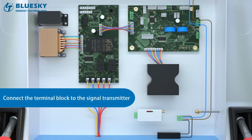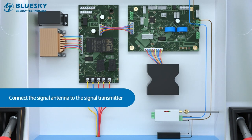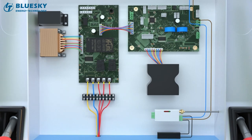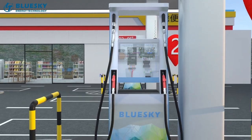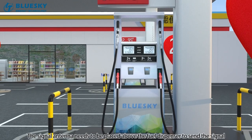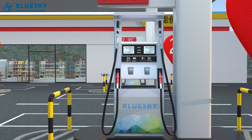Connect the terminal block to the signal transmitter. Connect the signal antenna to the signal transmitter. The signal antenna needs to be placed above the fuel dispenser to send the signal.